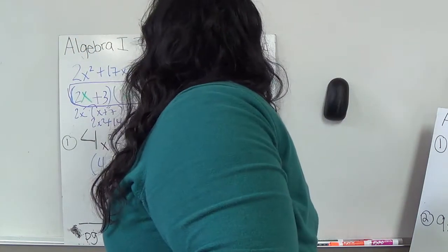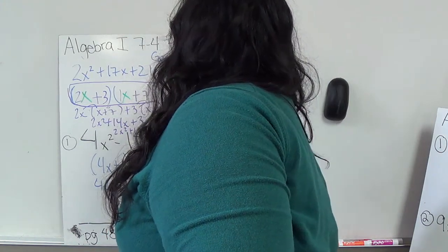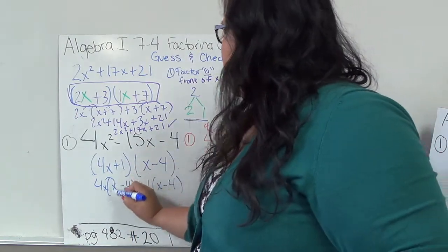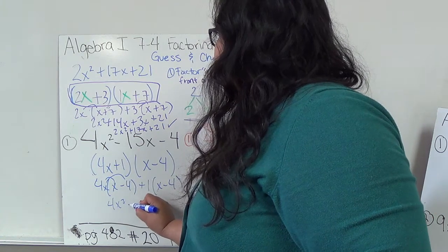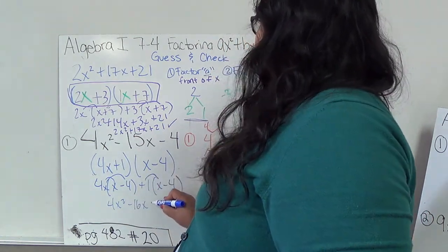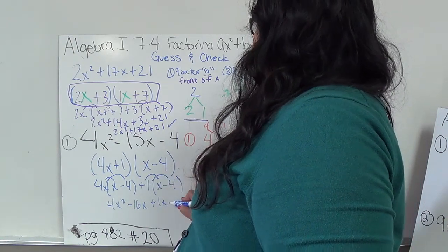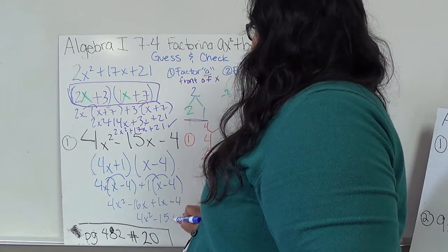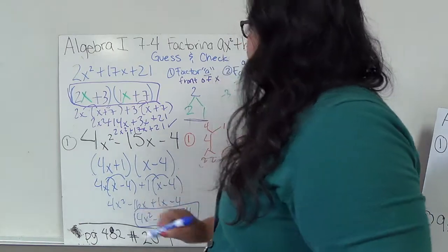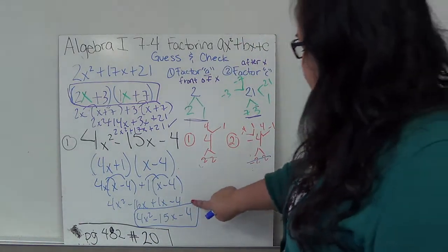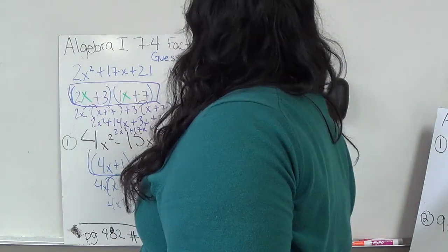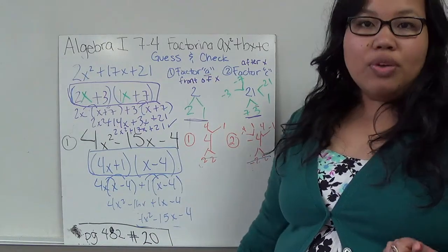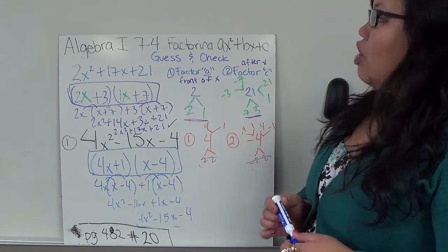Let's try (4x + 1)(x − 4). Multiplying: 4x times x is 4x². 4x times negative 4 is negative 16x. Positive 1 times x is positive x. And 1 times negative 4 is negative 4. Combining: 4x² plus (negative 16x plus x) plus minus 4, which gives 4x² minus 15x minus 4. That's it! So the answer is (4x + 1)(x − 4). That's the whole guess-and-check process. For homework, turn to page 482, number 20. Write this down and I'll see you in class.